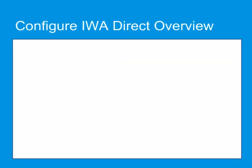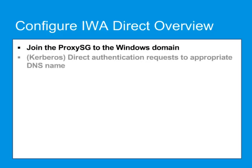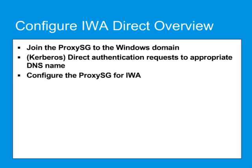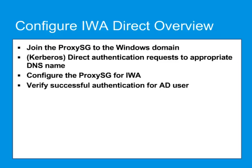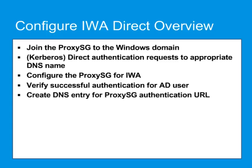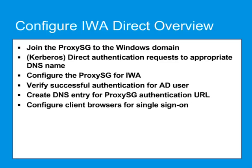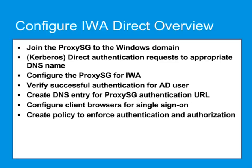To configure IWA direct authentication, you must complete the following tasks: join the ProxySG appliance to the Windows domain; if you plan to use Kerberos authentication, make sure that authentication requests are directed to the DNS name of the appliance's Active Directory machine account name. For more details, refer to the ProxySG First Steps web guide. Configure the ProxySG for IWA, verify that the appliance can successfully authenticate an Active Directory user using the IWA realm you create, create a DNS entry for the ProxySG authentication URL, configure the client browsers for single sign-on, and create the policy rules that will enforce authentication and optionally authorization.